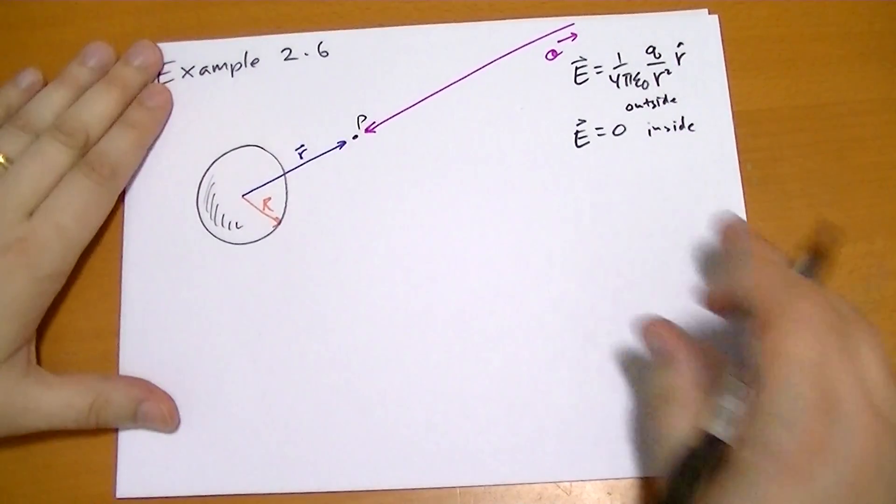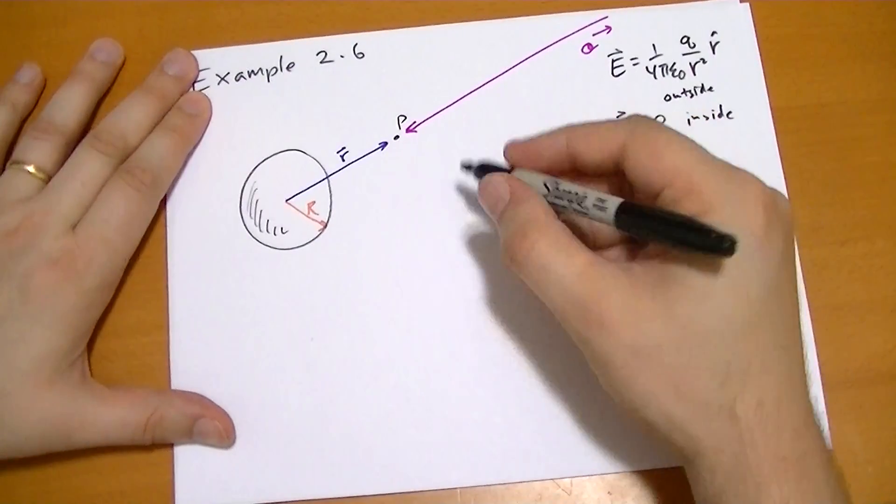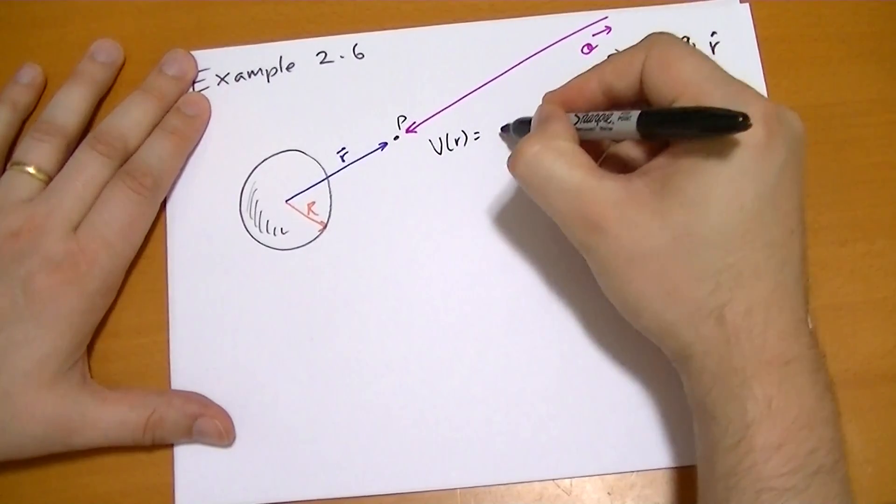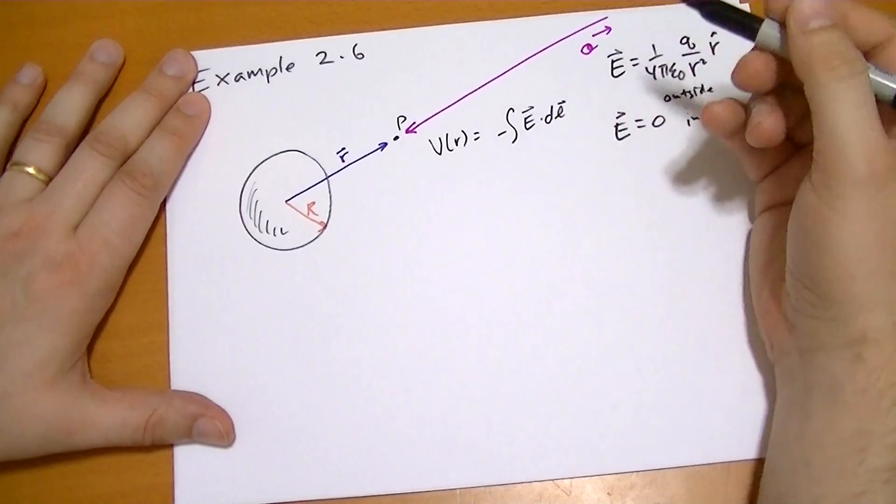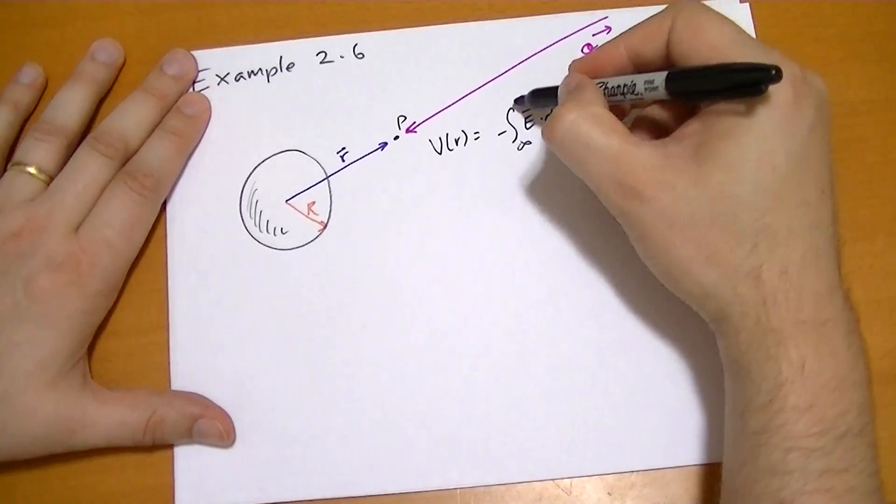So to calculate the potential at a point P outside the sphere, all we do is we just take the integral. So v at r is equal to the minus the integral of e vector dot dl vector. And we're going to start at infinity, and then we're going to go to the point r.